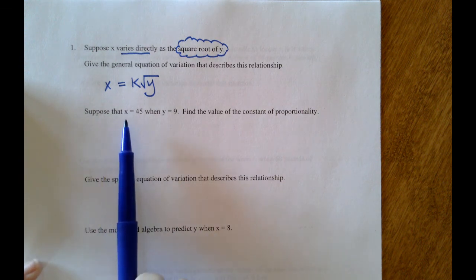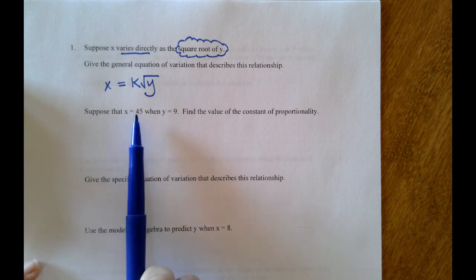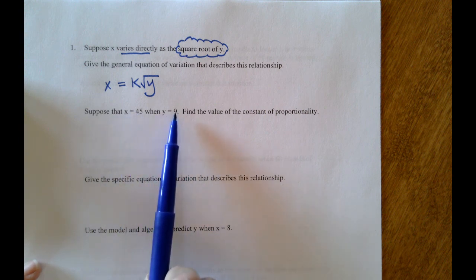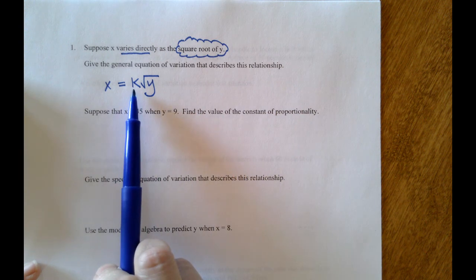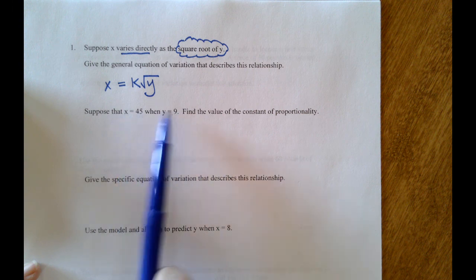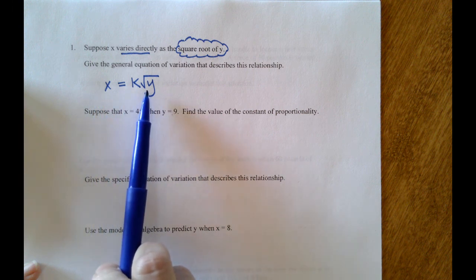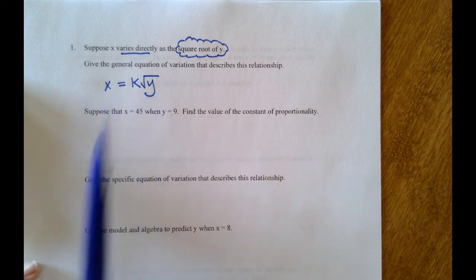Then they give us some more information. They tell us that when x equals 45, y equals 9, and they want us to find this constant of proportionality or the constant of variation. They want us to find k. Well, if you have an x-y pair and an equation that relates x and y, you'll plug in your x-y pair.